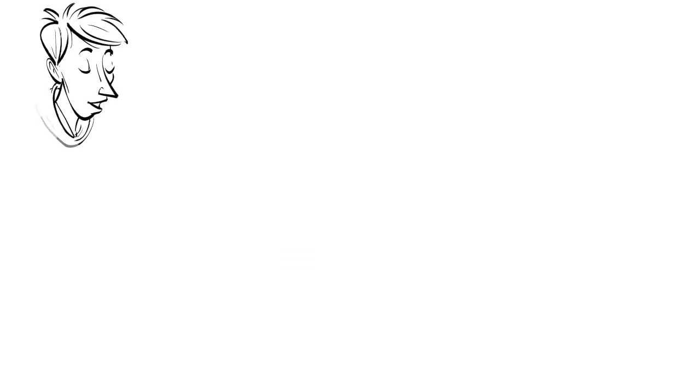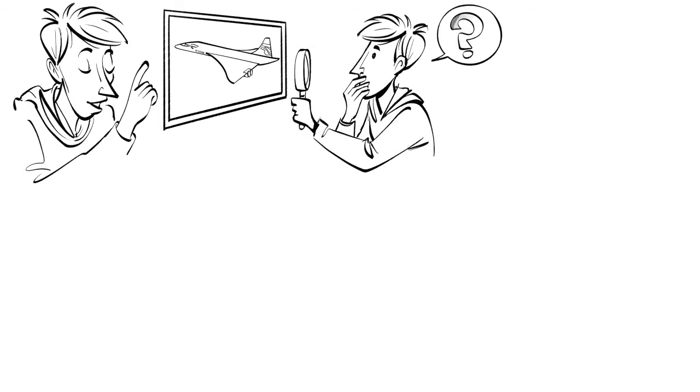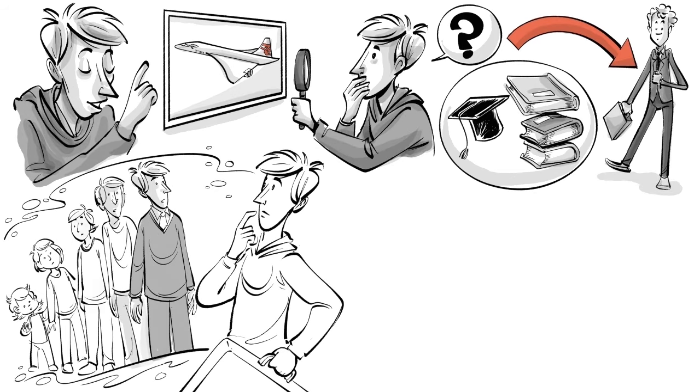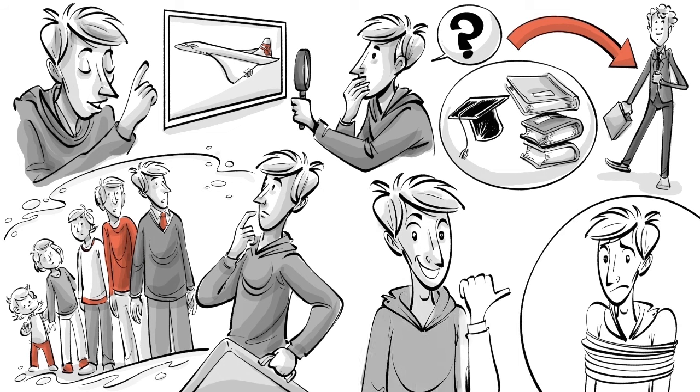If you're not immune to the Concorde fallacy and you could completely ignore all investments you have ever made into your education or getting to where you are today, what would you be doing differently going forward? Can you identify any sunk costs that are holding you back from making those changes?